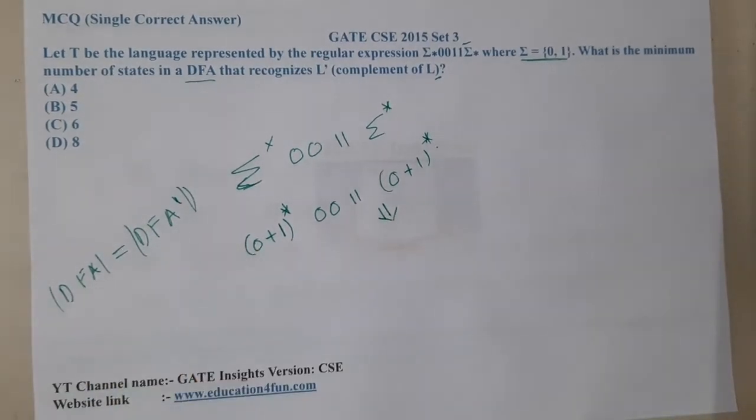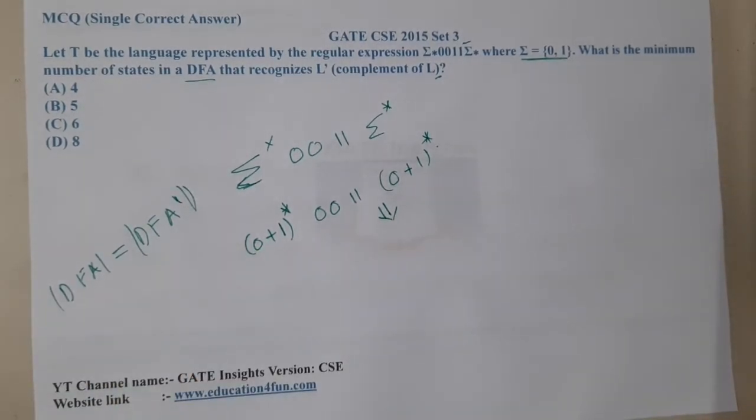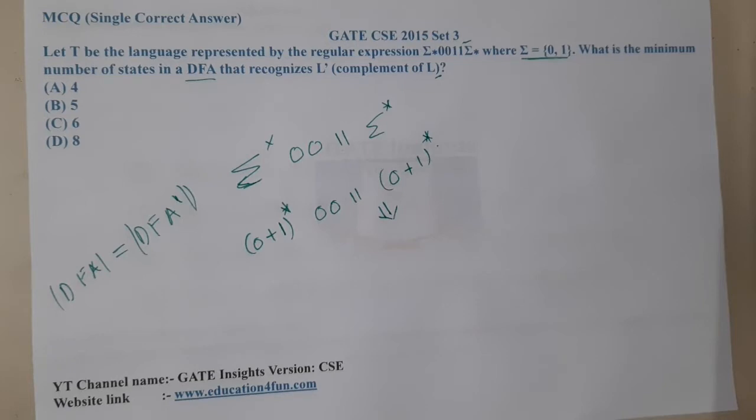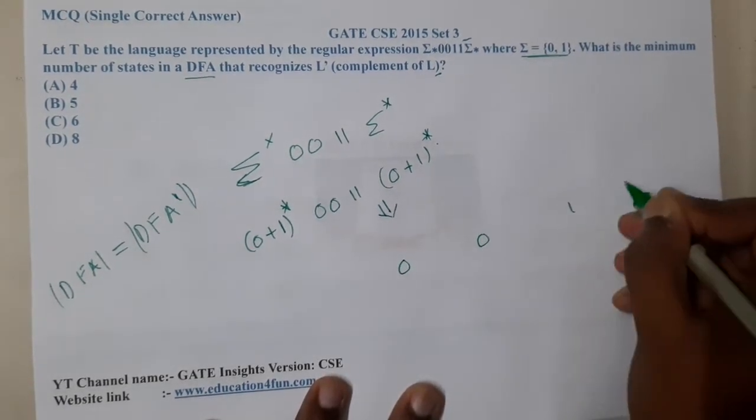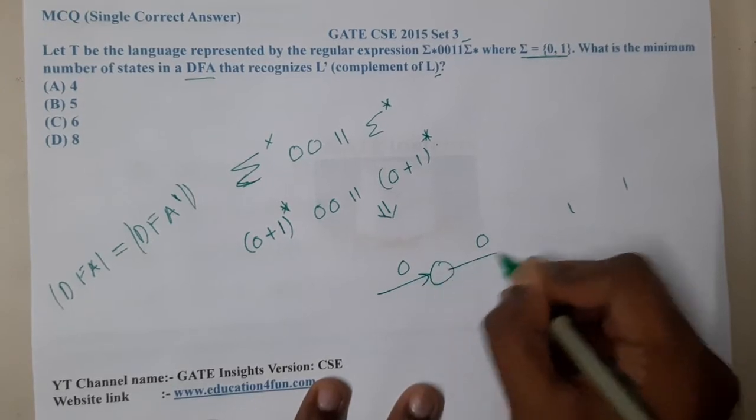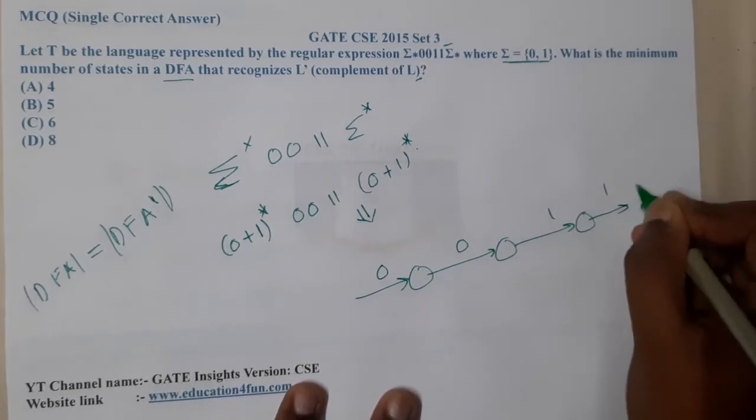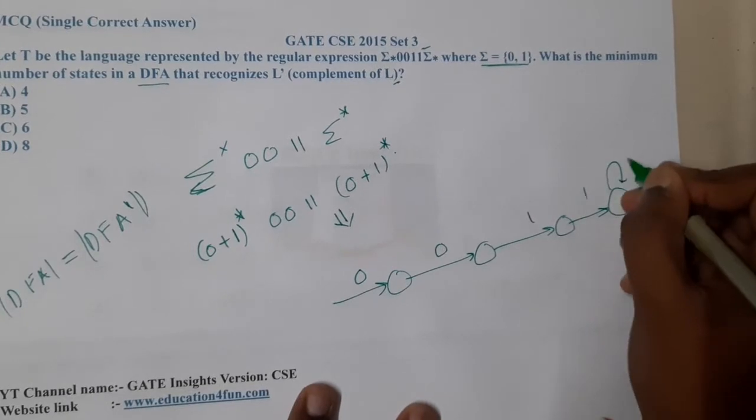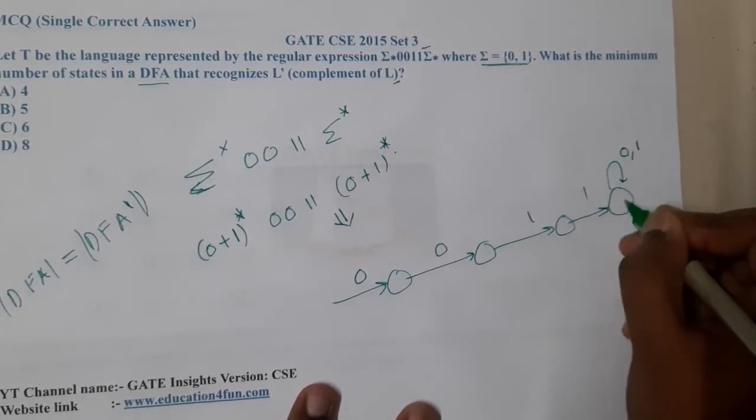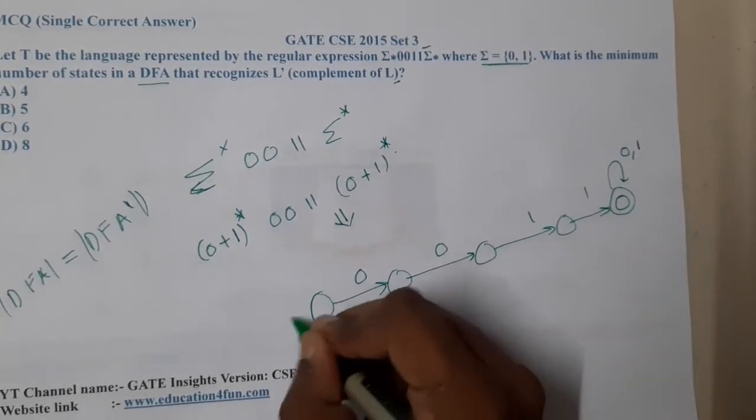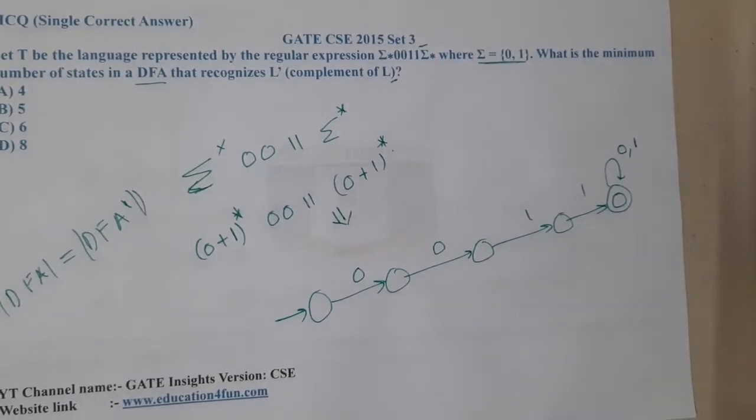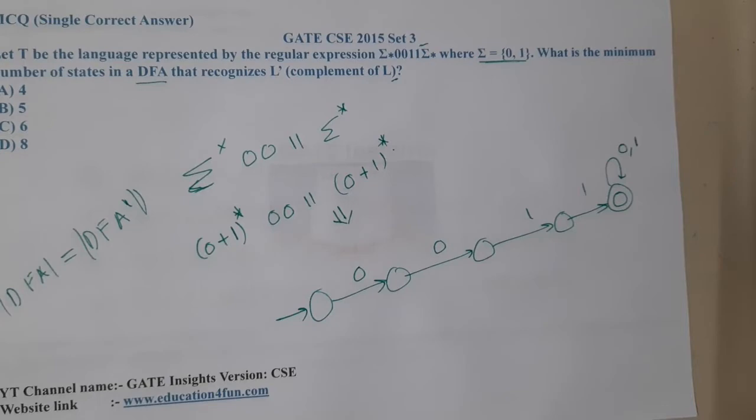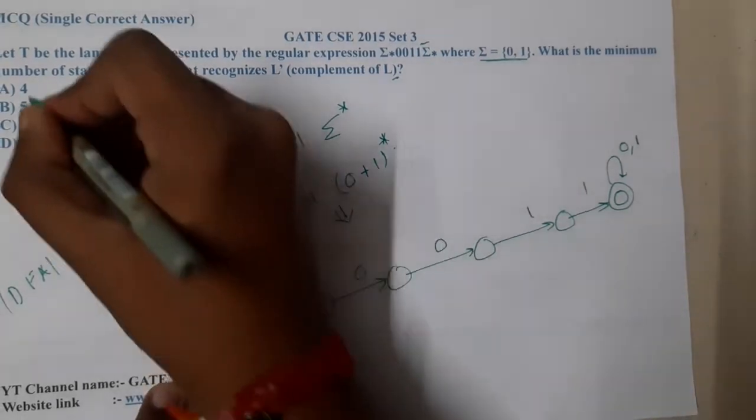So let us construct for this thing. If you observe carefully, it is indirectly substring 0011. So here I can have anything 0,1, that will be my final state and this is my start state. So a minimum of 1, 2, 3, 4, and 5 states are required. I can eliminate option A from here.